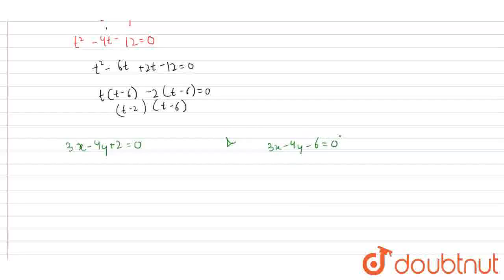Now from these two equations, we can observe that these two lines are parallel to each other. So the formula for the distance of parallel lines is d is equal to c2 minus c1 upon under root a square plus b square, whole modulus. So this is 2 minus minus 6 upon 3 square plus 4 square whole modulus. So the answer is 8 by 5.